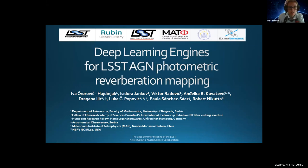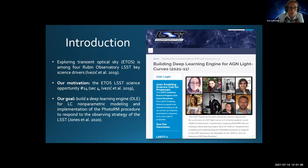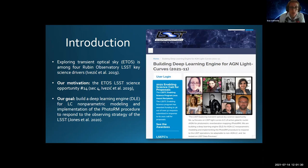My name is Iva Chvorovic Hajdinyak and I am a first year PhD student at Belgrade University. My colleague Isidora Jankov and I will present the latest results of the research our team is currently working on. Exploring transient optical sky is among four Rubin Observatory LSST key science drivers. We are motivated by the LSST science opportunity number 14, which enables harnessing LSST light curves of active galactic nuclei for photometric reverberation mapping. Our goal is to build a deep learning engine, DLE, for light curve non-parametric modeling and to implement photoreverberation mapping procedure to respond to the observing strategy of LSST.